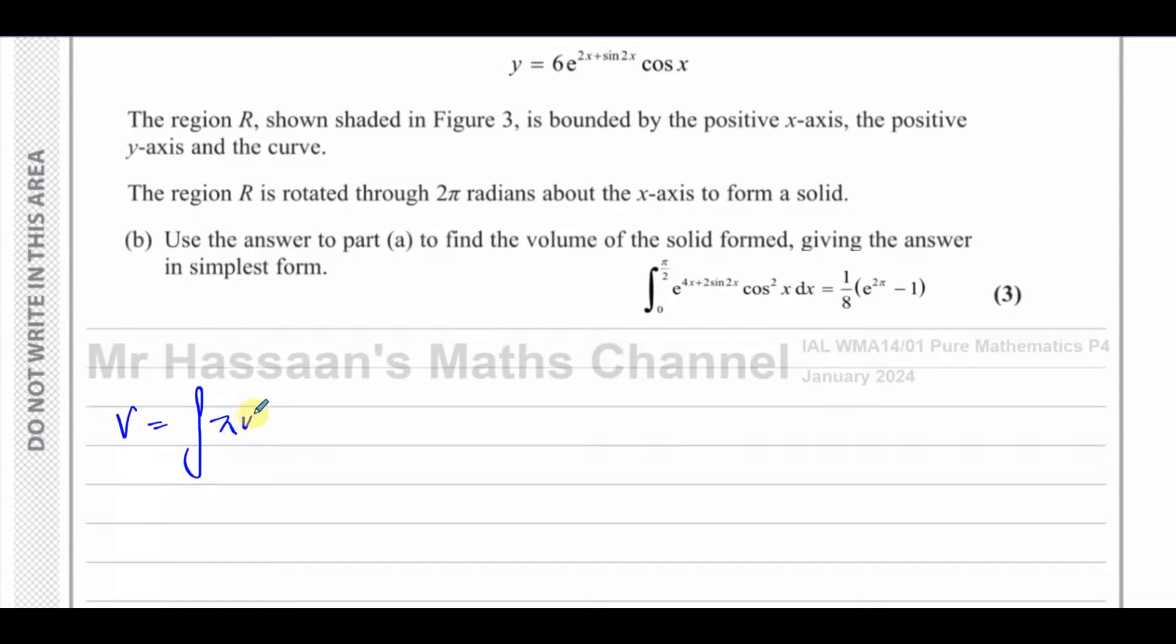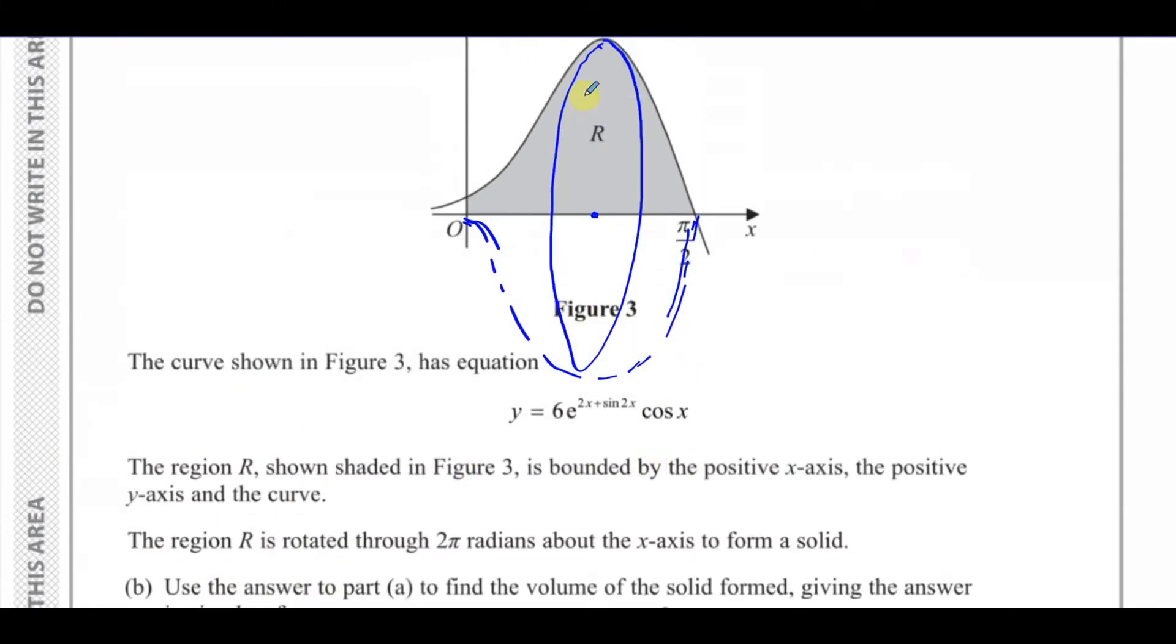This is because we're taking little cylinders, splitting it up into tiny little cylinders. The cylinders have a radius which is the y-coordinate of these points and a thickness which is a small amount in the x-axis. The volume of a cylinder is πr²h, so this would be π times r, which is y squared, times h, which is the small amount of x, adding up all the cylinders from the two limits.